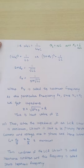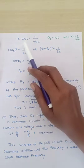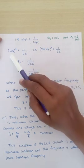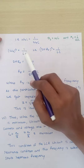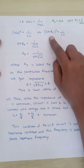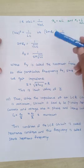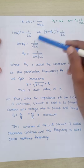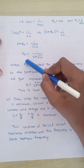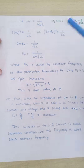Squaring both sides: ωr² = 1/LC. Since ωr = 2πfr, substituting gives (2πfr)² = 1/LC. Taking square roots: 2πfr = 1/√(LC). Therefore, the resonant frequency is fr = 1/(2π√(LC)). At this frequency, XL equals XC and the impedance of the circuit is minimum.